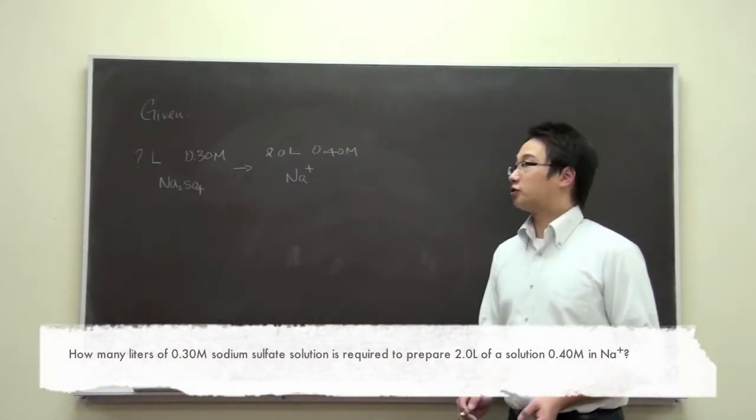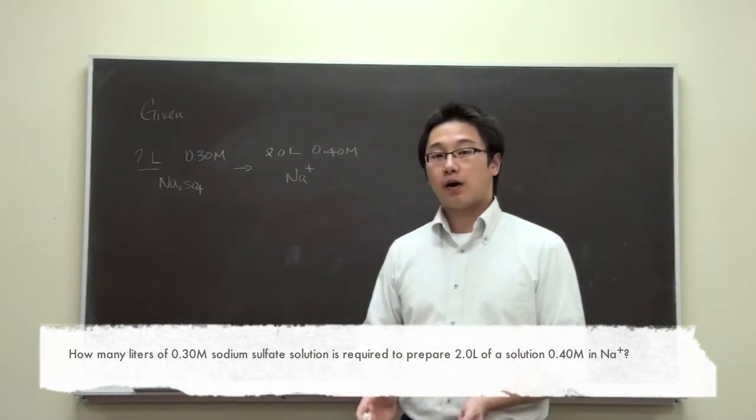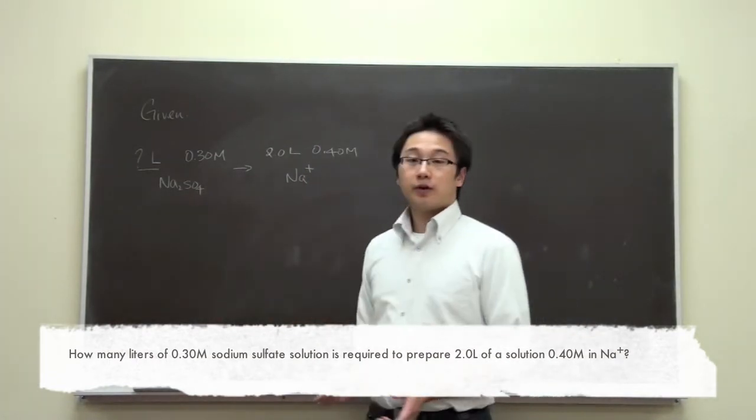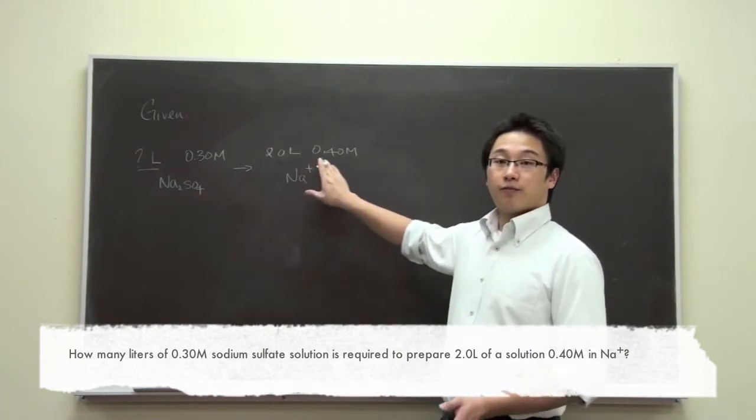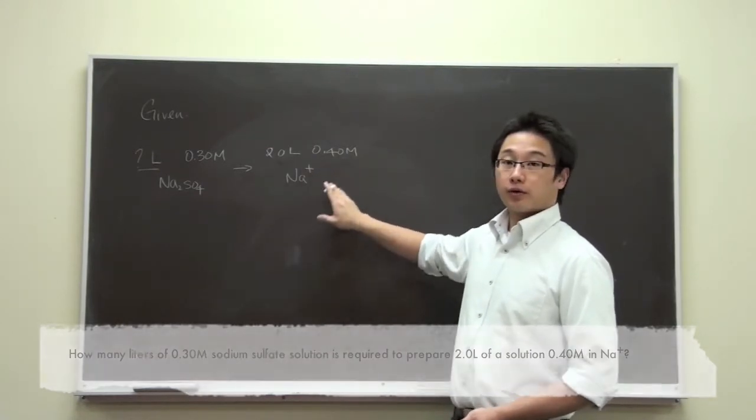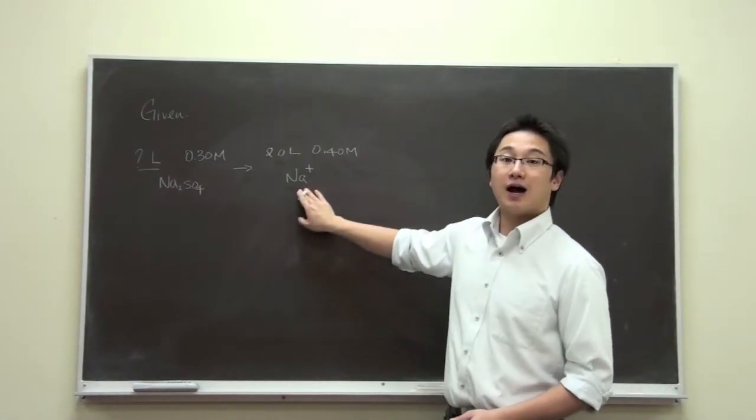So in this question, we were trying to find out how many liters was the volume required from this sodium sulfate solution to make 2 liters of 0.4 molar solution that contains this, this is the concentration of this ion.